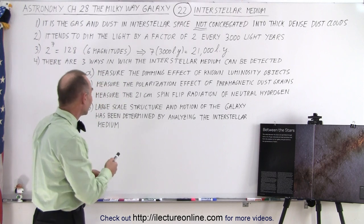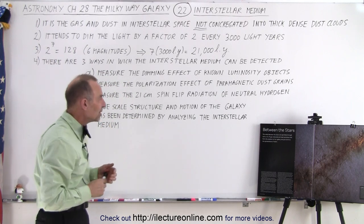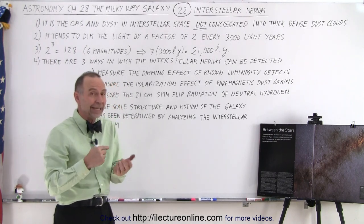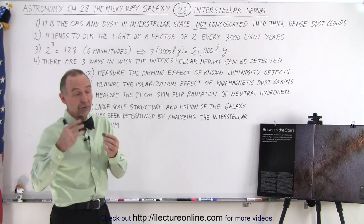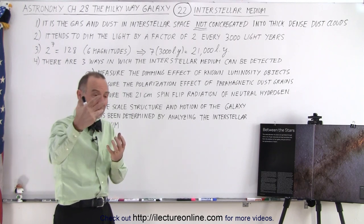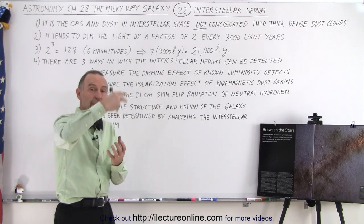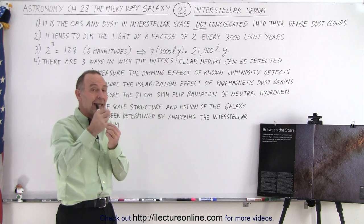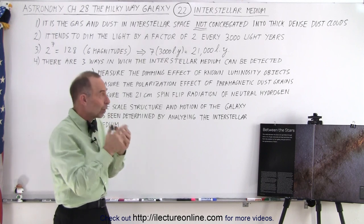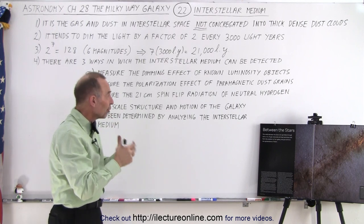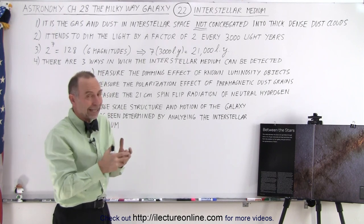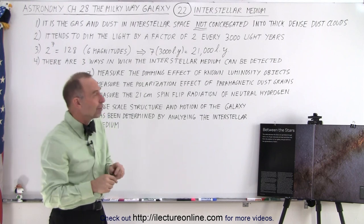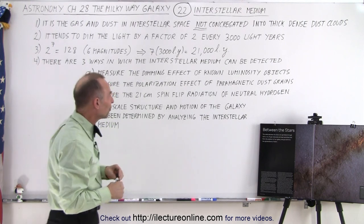Finally, we can measure the 21-centimeter spin-flip of the electron in neutral hydrogen. The electron must be in orbit around the hydrogen, and then it can spin-flip, emitting 21-centimeter photons that we can measure in the semi-microwave radiation range.